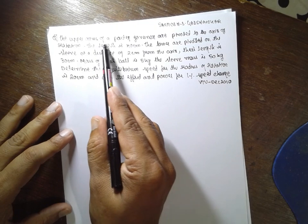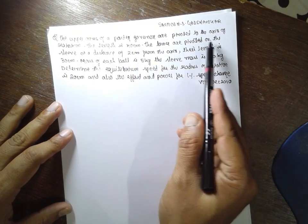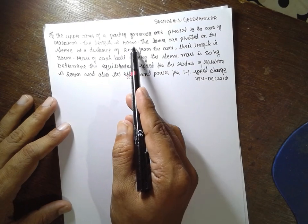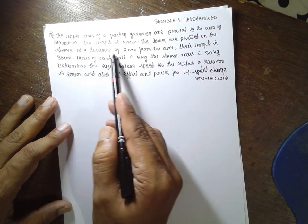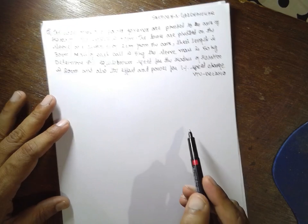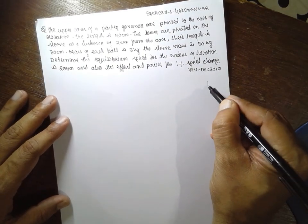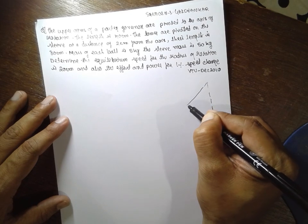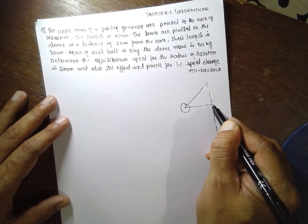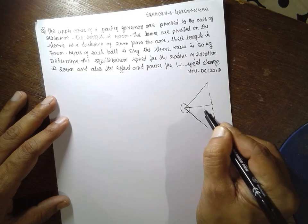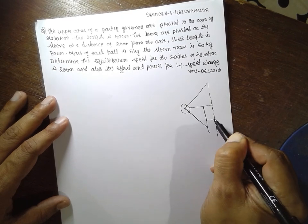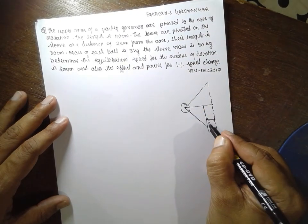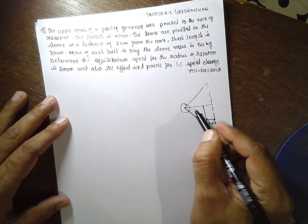The upper arms of a Potter Governor are pivoted on the axis of rotation. The length is 40 cm. The lower arms are pivoted to the sleeve at a distance of 2 cm. That means here alpha is not equal to beta in this problem, because the distance is given here. How much distance? 2 cm. If it is converted into meter, it is 0.02 m.